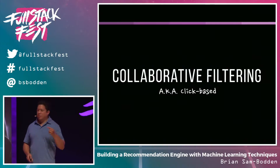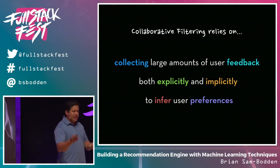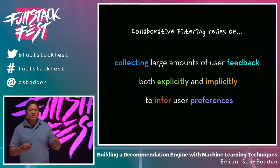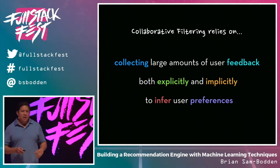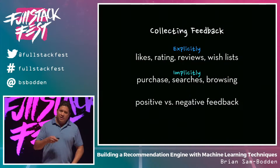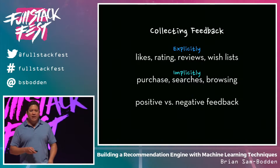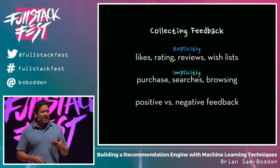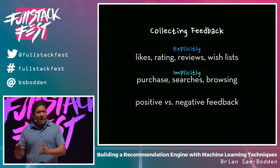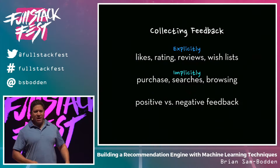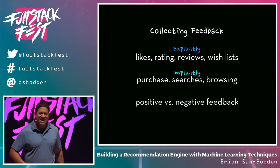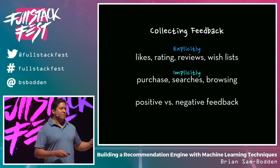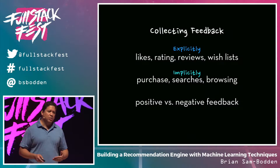Collaborative filtering is sometimes known as click-based recommendation engines. The idea is to collect large amounts of user feedback, both explicitly and implicitly, and infer preferences for specific users so you can recommend items. Feedback is a topic that is actually dicey — you can get into a lot of privacy issues and creepiness. For example, when an assistant recommends an item to me, I want to know why. Some people are okay with the mystery — how did they know I like panda bear outfits and swords? But I'd like to be presented with an explanation of why the item was recommended.